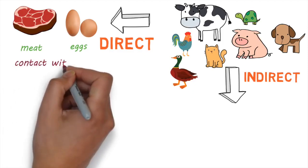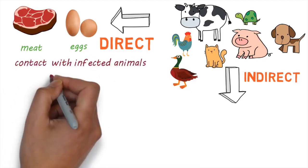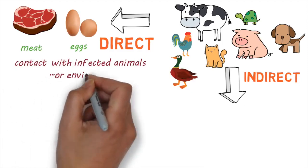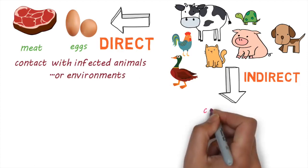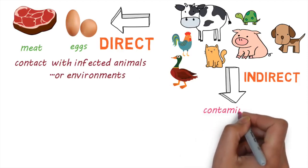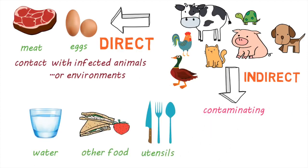Salmonella can also spread through direct contact with infected animals or their environments. It can also spread indirectly by contaminating water, other foods, utensils like knives and cutting boards, or the hands of someone who handles food.